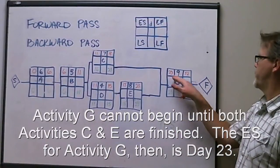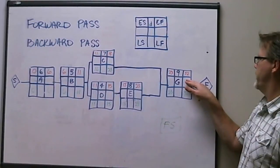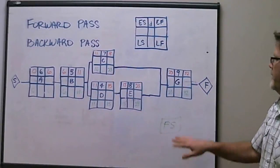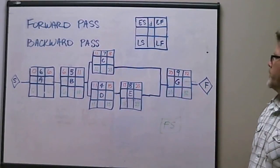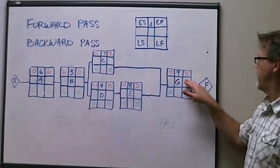Early start date 23 plus 9 is an early finish to activity G of 32. And if you look at this as the full and complete project, that from left to right on your forward pass, you have a duration of this project at first glance of 32 days.